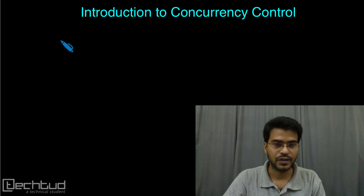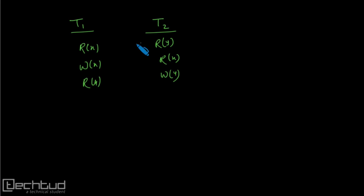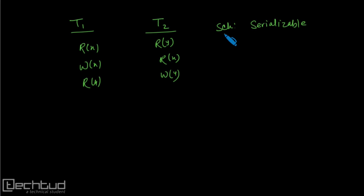To ensure the correctness of the schedule which we form using the transactions, it should be serializable. So let's say if we have transaction T1 and another transaction T2, they will have some operations, and these operations will be executing in an interleaved manner. We will create a schedule and execute it, and while creating the schedule we will ensure that the schedule is serializable, because the scheduler will only allow serializable schedules on the CPU to execute.